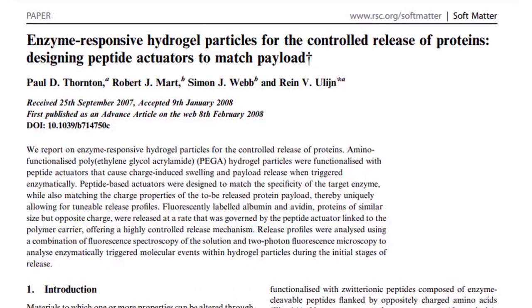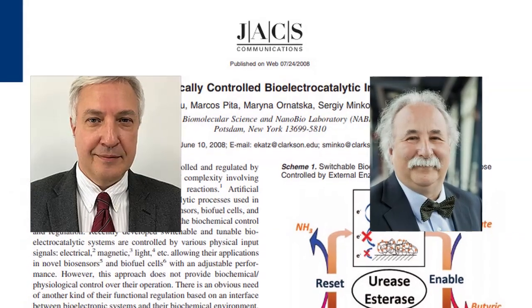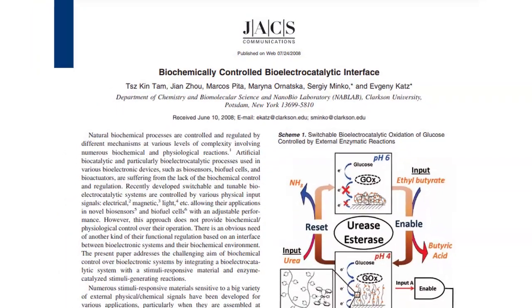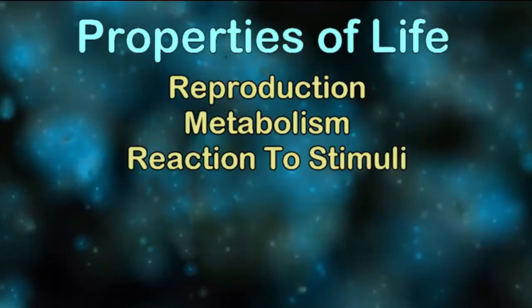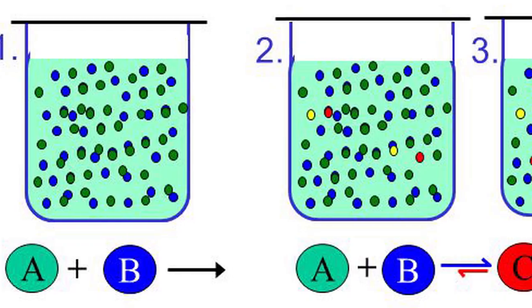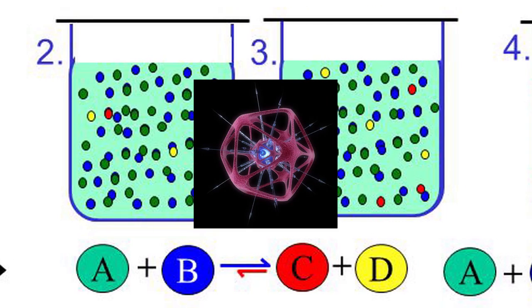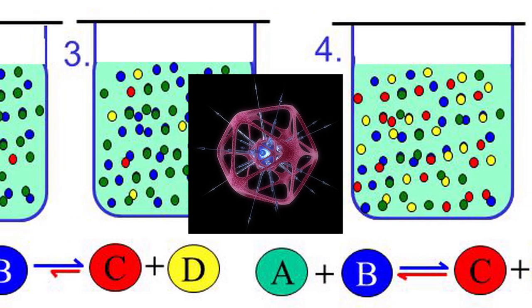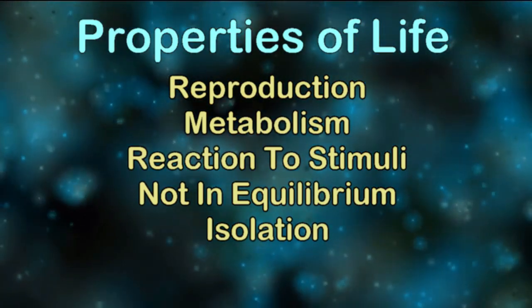While nearly all chemistry reacts in some way to its environment, a team led by Rein Ulijn at the University of Strathclyde in Glasgow, Scotland used peptide actuators to make an organic polymer hydrogel produce emissions of proteins when stimulated by a lyophilized enzyme on command. That same year, a team led by Sergey Minko and Evgeny Katz from the Department of Chemistry and Biomolecular Science at Clarkson University in Potsdam, New York caused glucose to catalyze butyric acid when stimulated by urea and ethyl butyrate. This ability to react has permanence because a living system is also not in equilibrium with the environment. This disparity is what allows for the chemical reactions within to occur. A system in equilibrium with the environment would be inert, incapable of internal chemical reactions, and therefore essentially dead. Because of this, a living system is isolated from its environment, which means it needs to have a body or some other barrier separating it from the rest of the world.